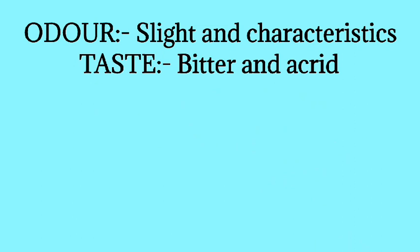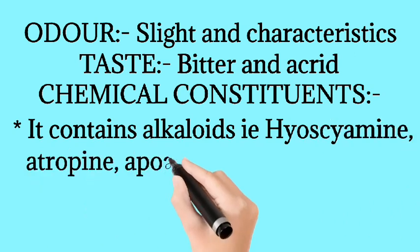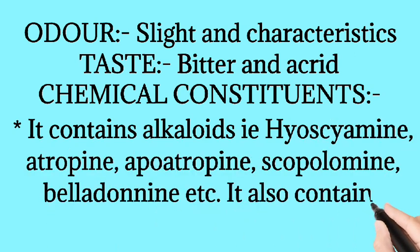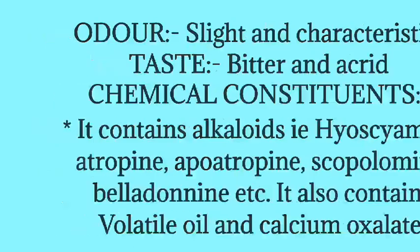Now we talk about its chemical constituents. It contains alkaloids, that is hyoscyamine, atropine, apoatropine, scopolamine, belladonine, etc. It also contains volatile oil and calcium oxalate.